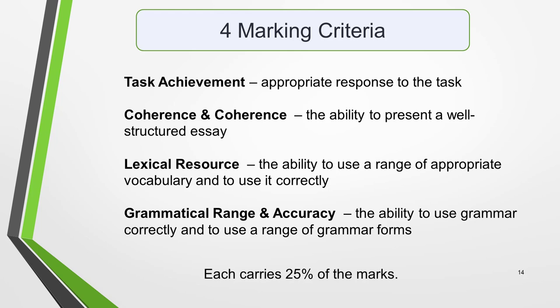Finally, we come to the marking criteria. As with the other three sections of the IELTS exam — speaking, reading, and listening — the writing test is marked according to four criteria. These are: task achievement, which is how well you respond to the task; coherence and cohesion, your ability to present a well-structured essay; lexical resource, your ability to use a range of vocabulary and to use it correctly; and grammatical range and accuracy, which is your ability to use grammar correctly and to use a range of grammar forms. Each carries 25% of the marks. Knowing what you'll be assessed on will help you to give the examiner exactly what they're looking for. I hope you found this video helpful and I look forward to seeing you in another one again soon. Bye for now.